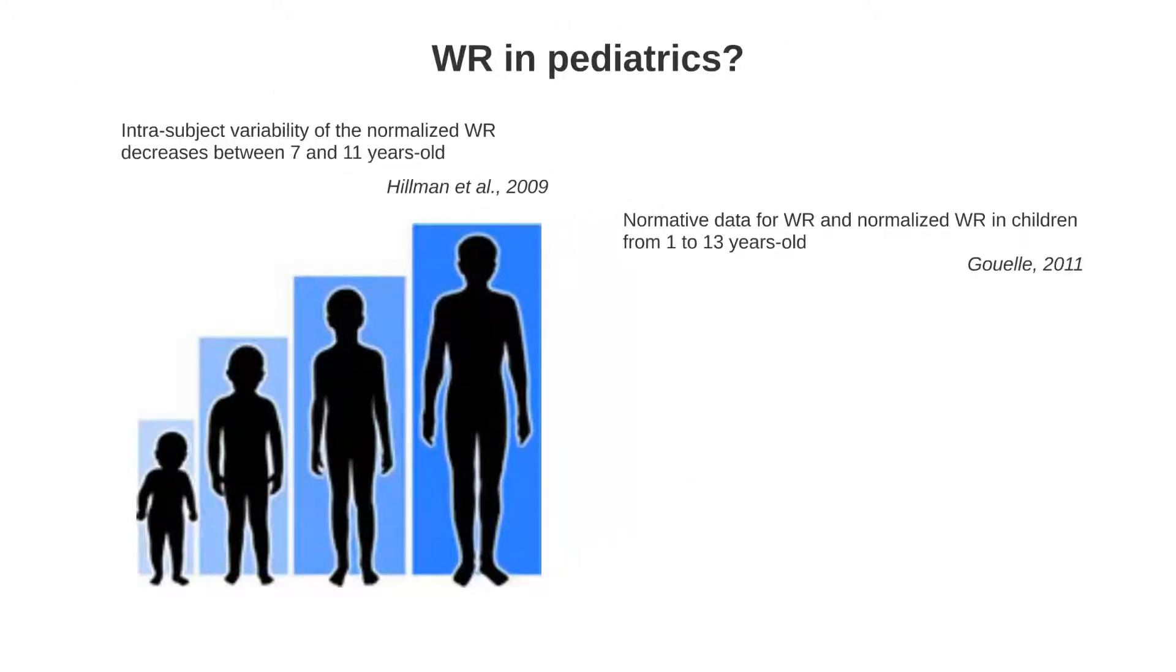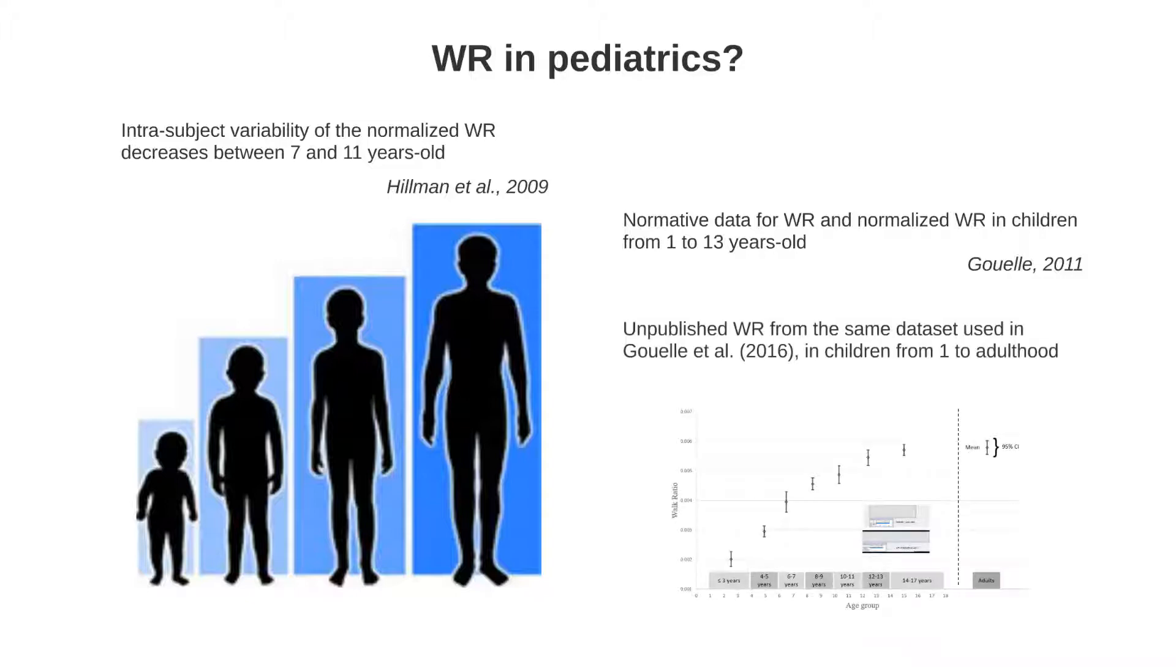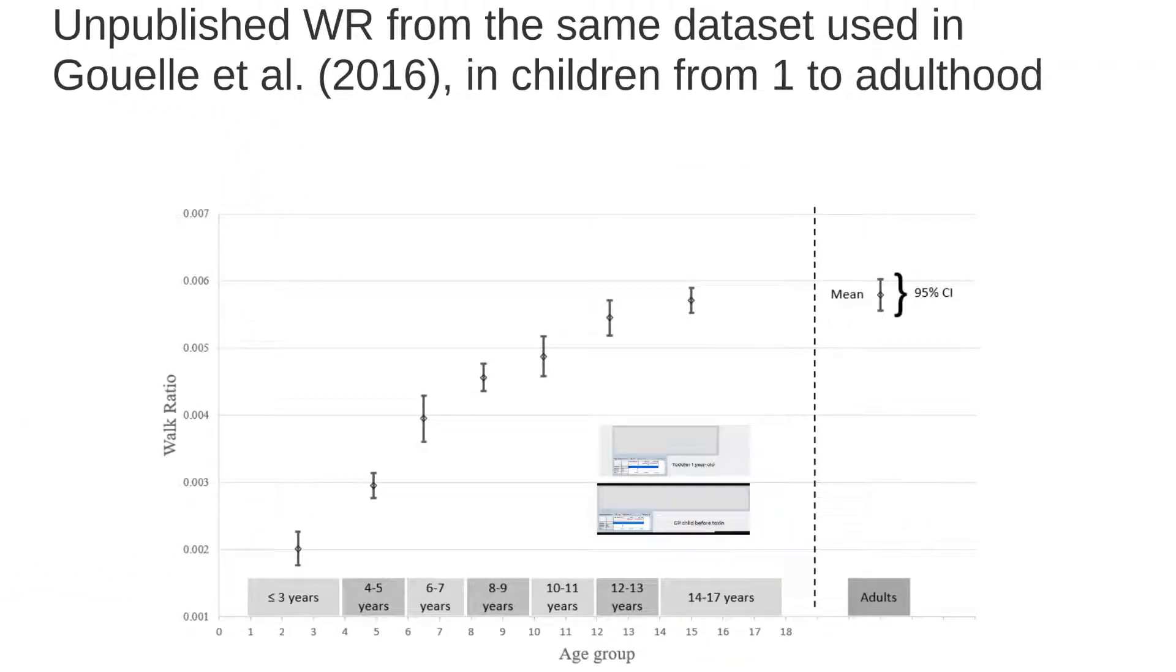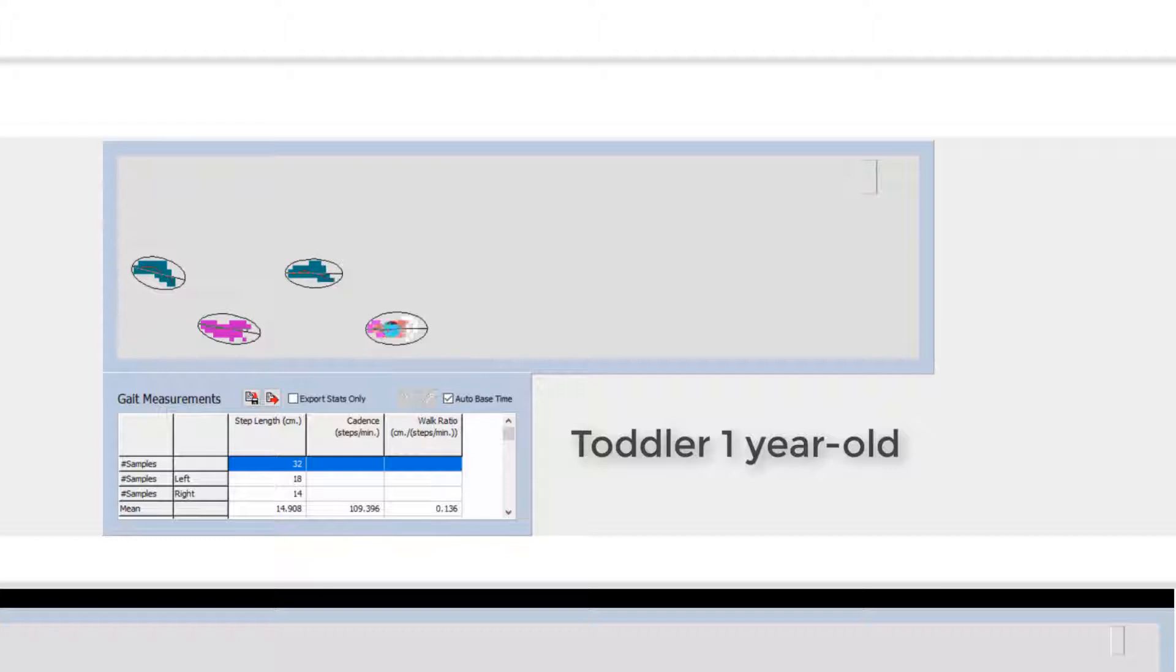Finally, few studies have looked at the walk ratio in children, but Hillman et al. in 2009 demonstrated that a normalized walk ratio refined between ages 7 and 11 years old. That means that intra-subject variability decreases with age to a stable configuration. Moreover, in a 2011 PhD thesis, Goell presented normative data for walk ratio and normalized walk ratio in children from 1 to 13 years old. This figure represents means with a 95% confidence interval for the walk ratio in children from 1 to adulthood. This unpublished walk ratio comes from the same dataset used by Goell et al.'s publication in 2016 and demonstrates how the walk ratio evolves in children and adolescents. As you can see here, young toddlers walk with small steps and increased cadence, inducing a really low walk ratio.